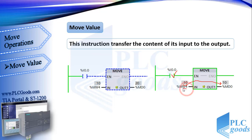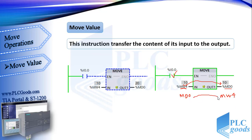Usually input and output data types are the same. But sometimes they may be different. Here the input address MW4 uses 16 bits, and MD0 has 32 bits. So this instruction can transfer the MW4 value to MD0, but it cannot transfer a number with 32 bits to an address with 16 bits. Another point is that the input value can be transferred to more than one address.